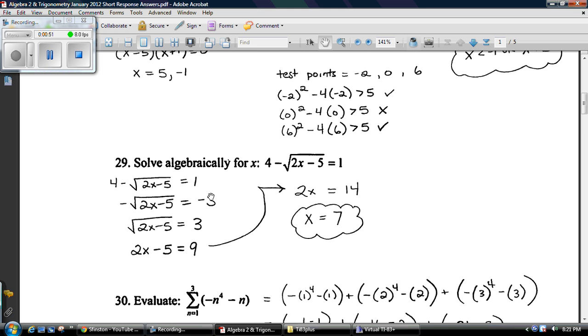29. Okay, so I'm just going to try and set this, get the radical on one side and numbers on the other. So subtract 4 over, divide by negative 1, square both sides, and try and solve for x. That's it.